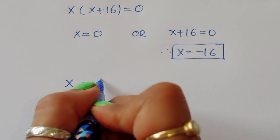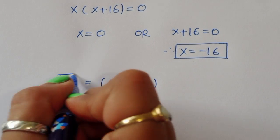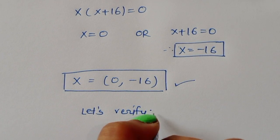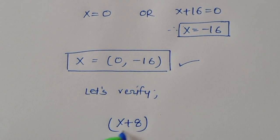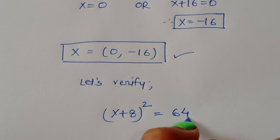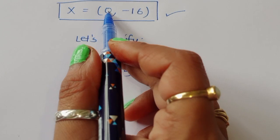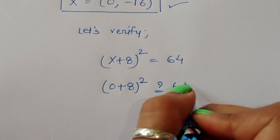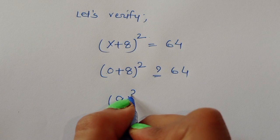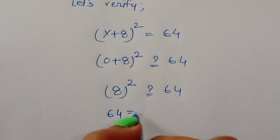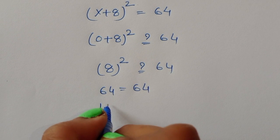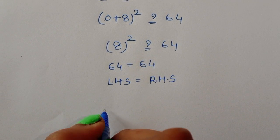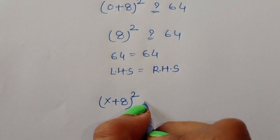We got the same values of x equal to 0 and minus 16 in both methods, so this is the correct solution. Let's verify: substituting x equal to 0 into the equation, 0 plus 8 whole square equals 8 square equals 64, so LHS is equal to RHS. Now for the next value, x equal to minus 16.